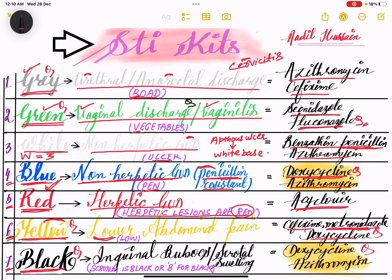The last kit is black. The black kit contains doxycycline and azithromycin, and it is used for inguinal buboes and scrotal swelling. Buboes are actually inguinal lymphadenopathy which is very painful. Mnemonic: B for black, B for buboes. Also, the color of the scrotum is black — so remember the black kit is used for inguinal buboes and scrotal swelling. This is a very potential exam question.